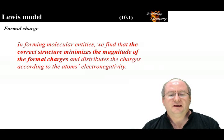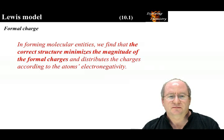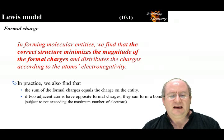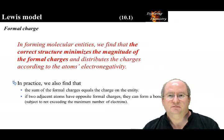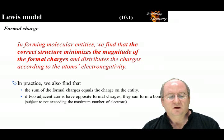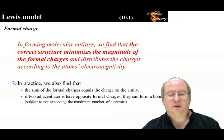In forming molecular entities, the correct structure minimizes the magnitude of the formal charges. In application, we also distribute the charges according to the atom's electronegativity. Ensure the sum of the formal charges equals the charge on the entity, just like with oxidation states. And what we find is that if two adjacent atoms have opposite formal charges, it may be possible to form a bond. The concept of formal charge and forming the correct structure will make more sense as we apply them.